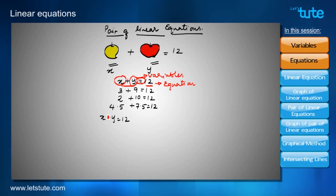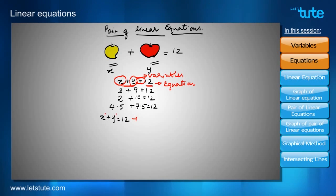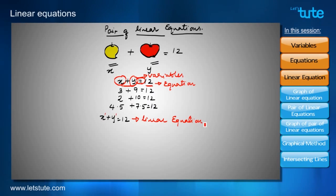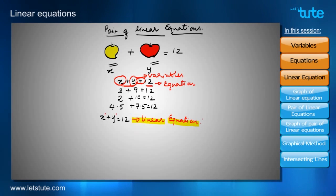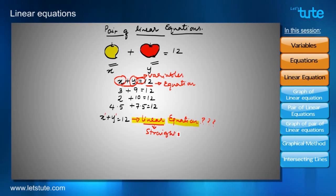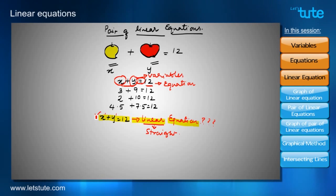In this equation, there is no power written, which means the power is 1. When the powers of the variables in an equation are 1, that equation is called a linear equation. The word 'linear' means straight — such equations where powers of the variables are 1 give straight lines.